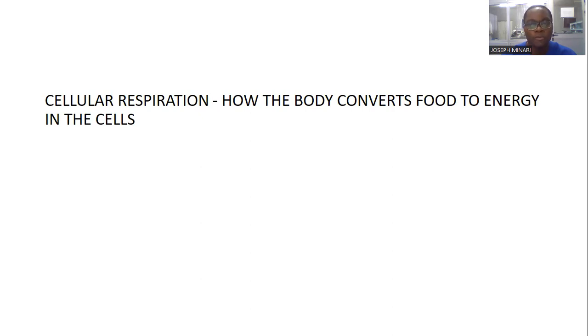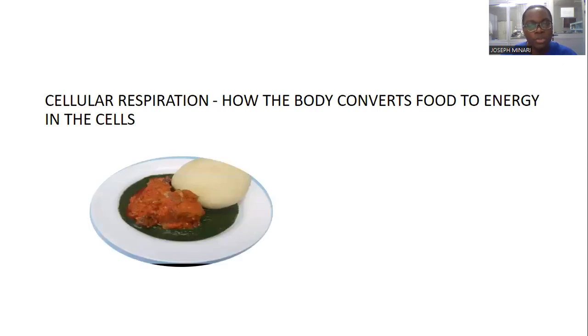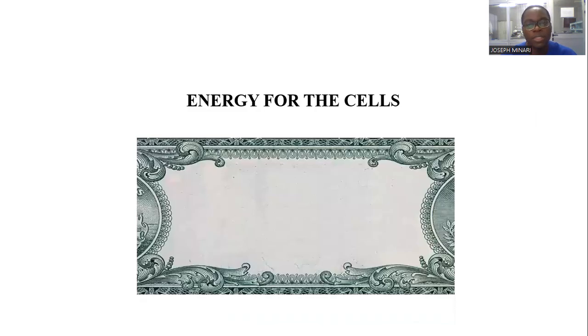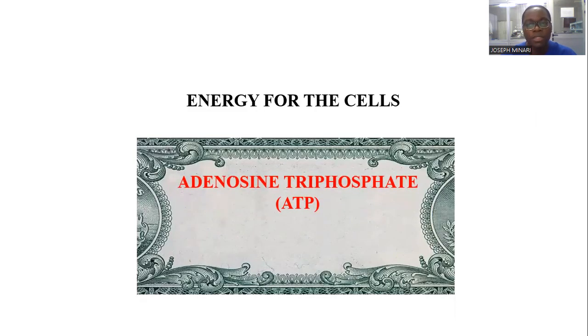When we talk about cellular respiration, we're talking about how the body converts sugar to energy needed by the cells. When you take your food, energy is being produced. The kind of energy the body uses is called ATP — adenosine triphosphate — which is the currency of the cells. It helps the cells drive their activity and assists the whole organism in whichever activity it wants to undertake.